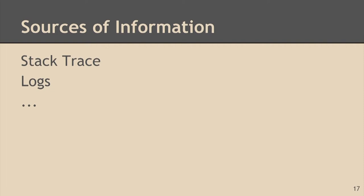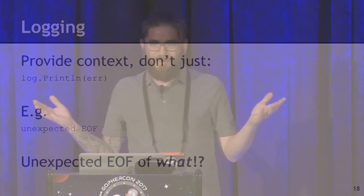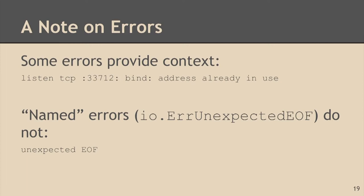The first thing I want to say about logging is: provide context. Don't just log a print line error. There are a lot of errors in the Go standard library that give you no context — like all the errors in the IO package. 'Unexpected EOF' — unexpected EOF of what? What was the file? What was going on at the time? Some errors do provide context, which is really useful. I think about errors in Go in two classes: either an error you test if it's nil or not, or named errors like in IO, which you can compare and branch and do flow control based on.